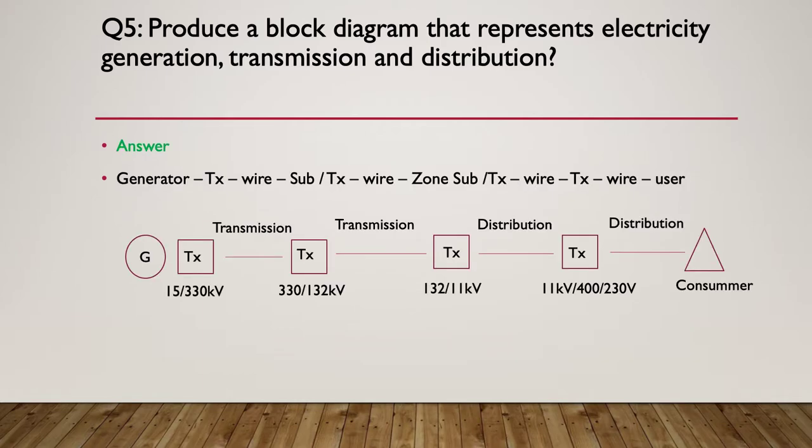So here's our answer the way I've done it. I've kind of written it out in text: a generator to a transformer, some wire, substation and a transformer, some more wire, zone substation transformer, some more wire, transformer out in the field, then some more wire, and then the actual user.